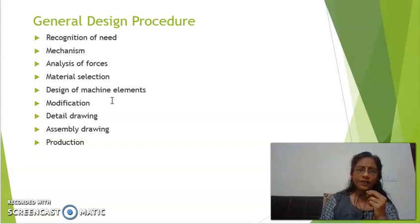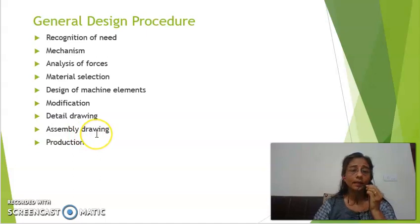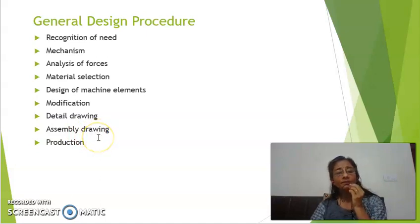After our modification is done, we will be drawing detailed drawing as well as assembly drawing. Nowadays, we will be using various softwares like Creo, maybe CAD for functioning this drawing part. One more parameter is there which is not shown here, that is the next part which is used in the industry, that is 3D printing and prototype modeling. After 3D printing and prototype modeling, final production will be started. Thank you very much.